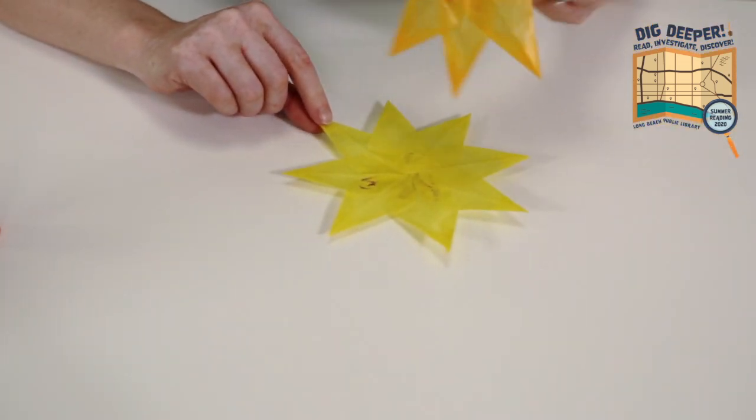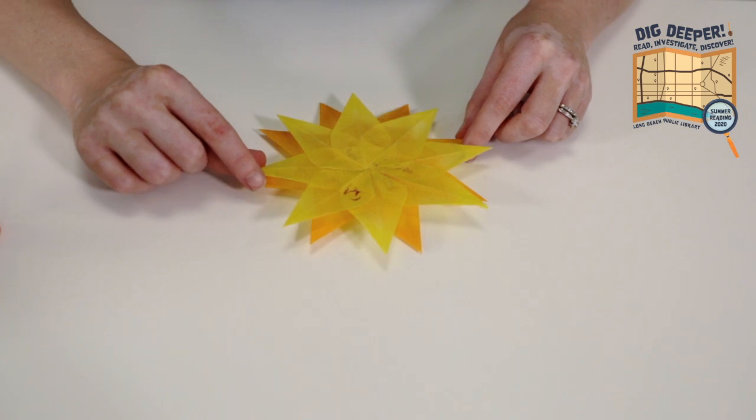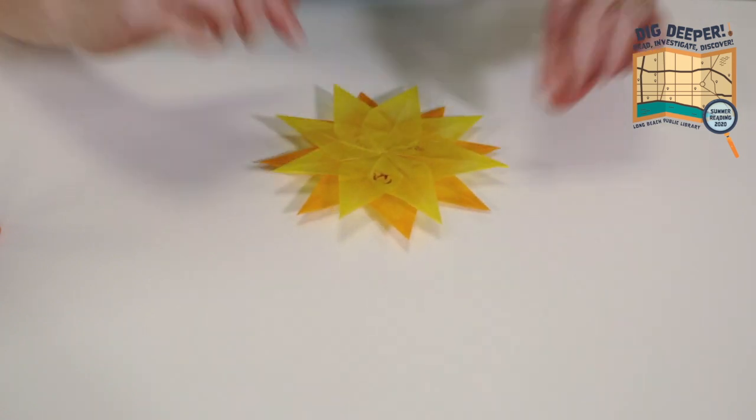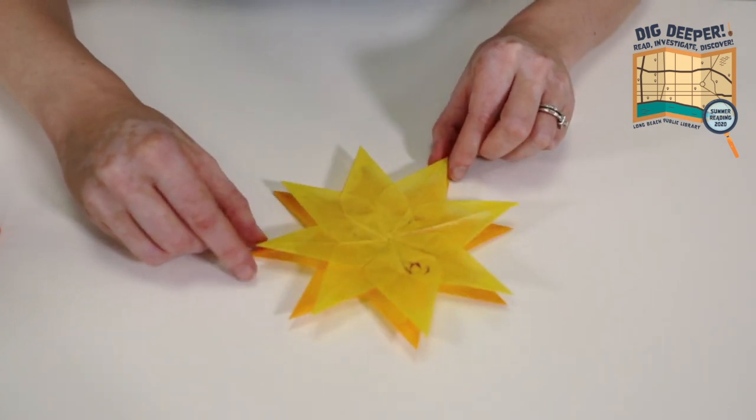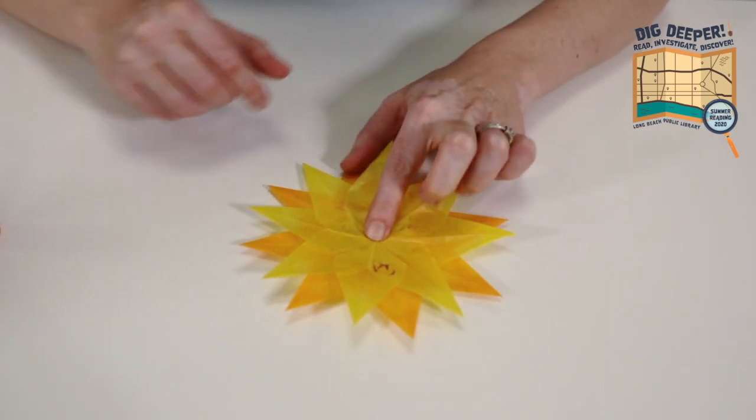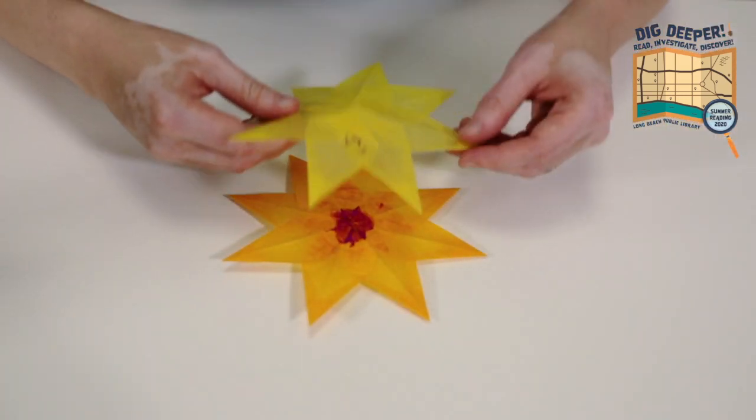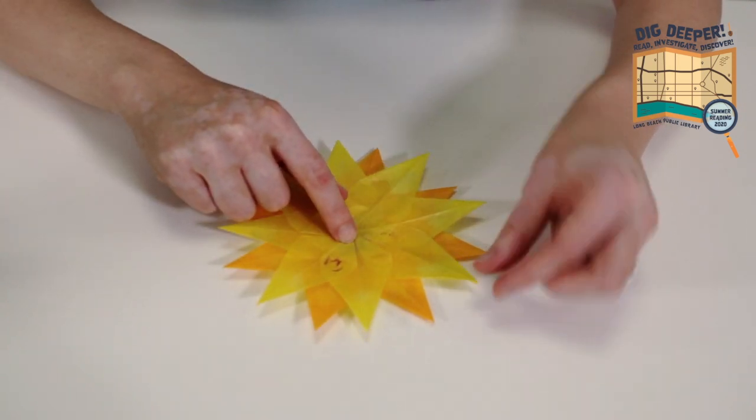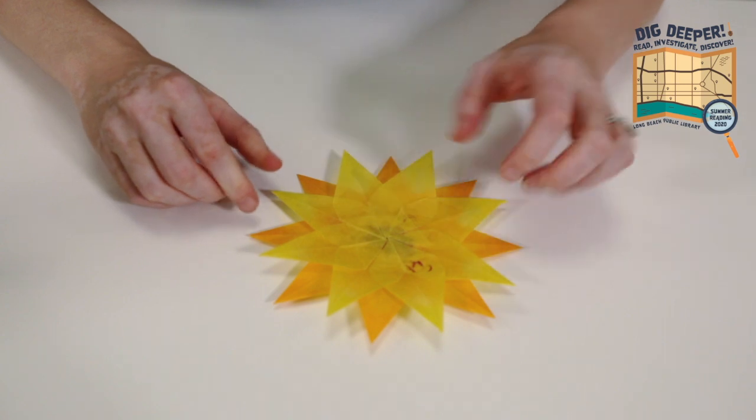Next, you will take one of your stars and overlap it over the other one. You can see which one you like best. But honestly, once they're up in your window and the light is shining through them, you won't really be able to tell which color is on top. Okay, so I'm going to line them up like this first. And then I'm just going to turn the one on top a couple of degrees there. And then I'm going to put some glue right here. And again, I want it to be kind of where these points are in between the other points. And that is your complete window star.